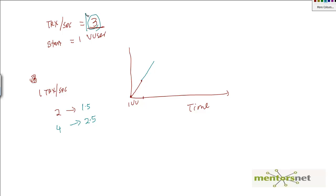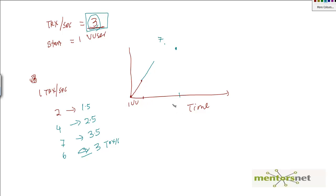Then LoadRunner tries 7 virtual users and gets 3.5 transactions per second — more than the stated goal — so it ramps down to 6 virtual users. With 6 virtual users, it gets close to 3 transactions per second and the goal is achieved, let's say at time t = 15 minutes. After that, LoadRunner holds steady and runs for, say, 30 minutes, and then ramps down.